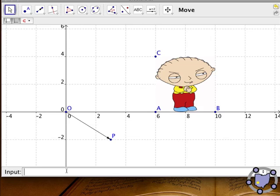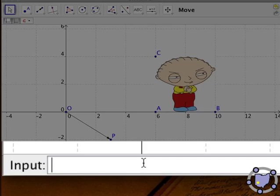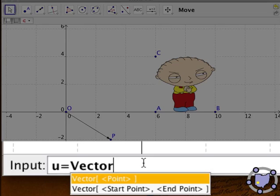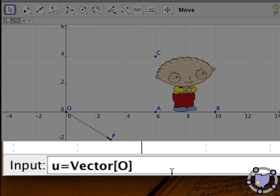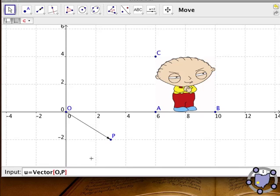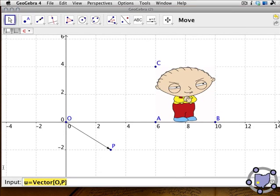You could also type in - and with vectors you use a lowercase letter - you could type something like this: u = Vector. Notice it gives you syntax, vector with the starting point and ending point. So literally we could have typed this in. We do the exact same thing. We already have our vector in there, so no need for that, but just to let you know you could do that.